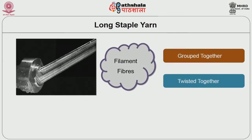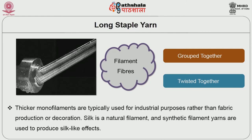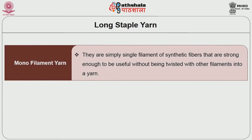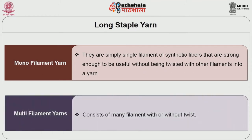Next we are going to see filament yarn, the second category of yarn. Filament yarn is a very long continuous fiber, either twisted together or only grouped together. Thicker monofilaments are typically used for industrial purposes rather than fabric production or decoration. Silk is a natural filament and synthetic filaments are used to produce silk-like effects. Continuous filament yarns are produced either by combining a set number of filaments together, or by producing the number and thickness of filaments simultaneously in one spinning operation, as in the case of man-made fibers. Under filament yarn, there are two categories: monofilament yarn and multifilament yarn. Monofilament yarns are simply single filaments of synthetic fibers that are strong enough to be useful without being twisted with other filaments into yarn.